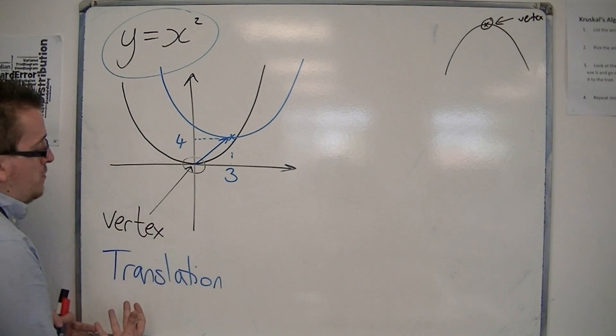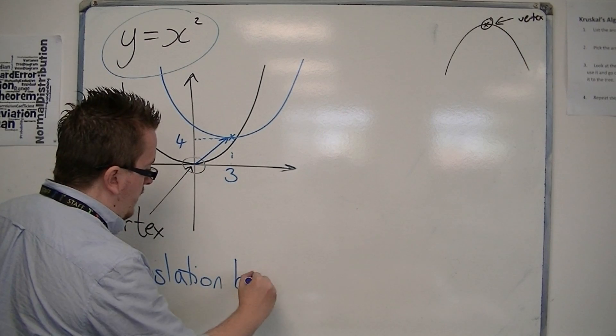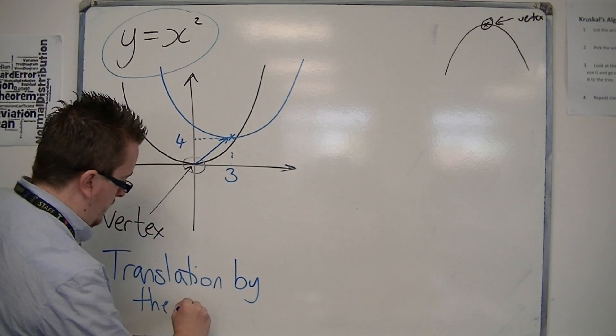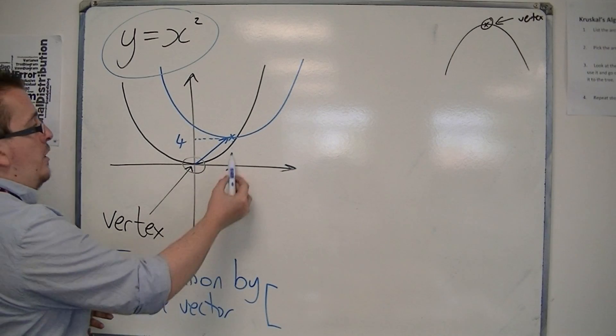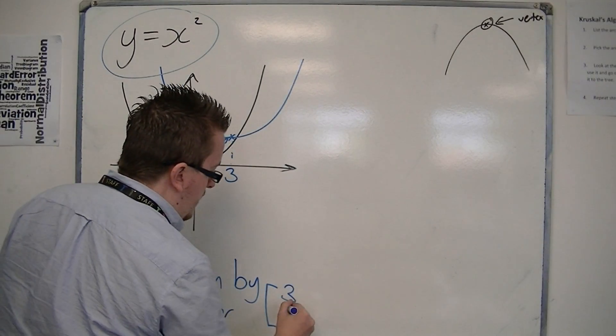So it is a translation by the vector. And it's gone 3 along, 4 up. So 3, 4.